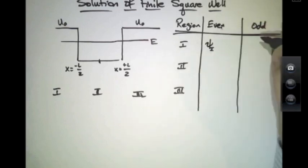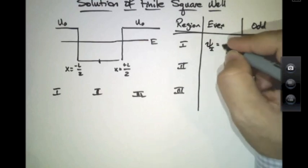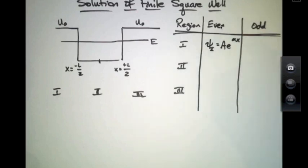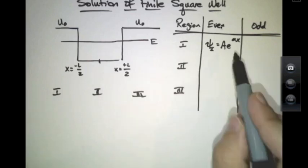So, in this case of psi 1, it's going to be some e to the alpha x. I say that because I should see exponential damping in the region x less than zero, and I get that with e to the alpha x.